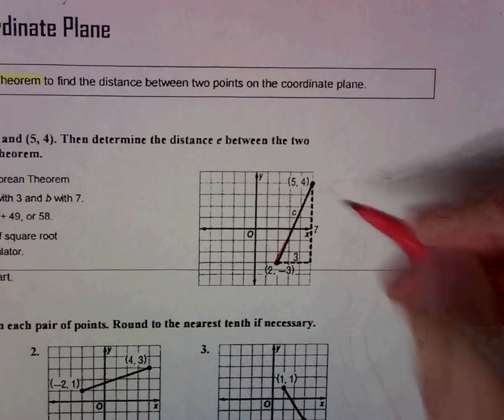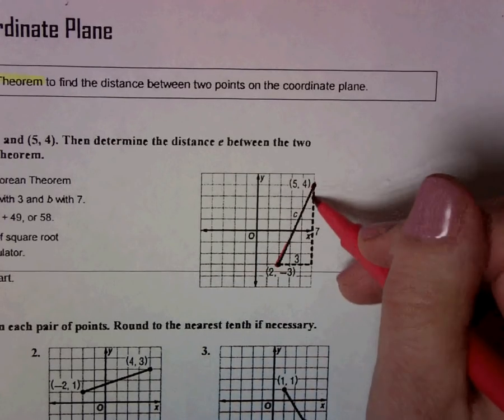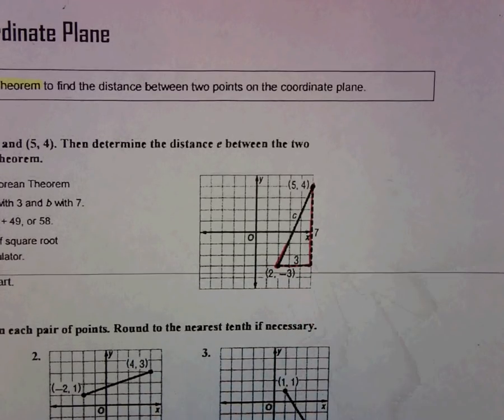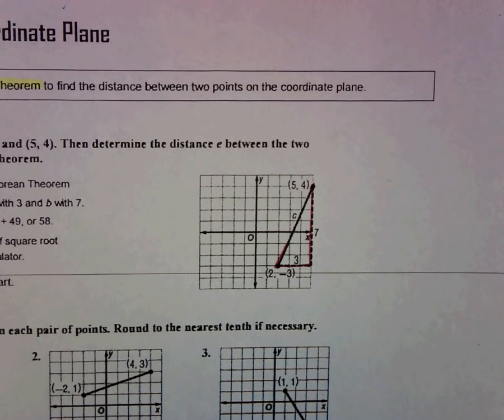I want you to notice that if it's a diagonal line, you can't just count the spaces because it's going diagonally. But we can draw a right triangle between those two points and then use that information and the Pythagorean Theorem to find the missing side.